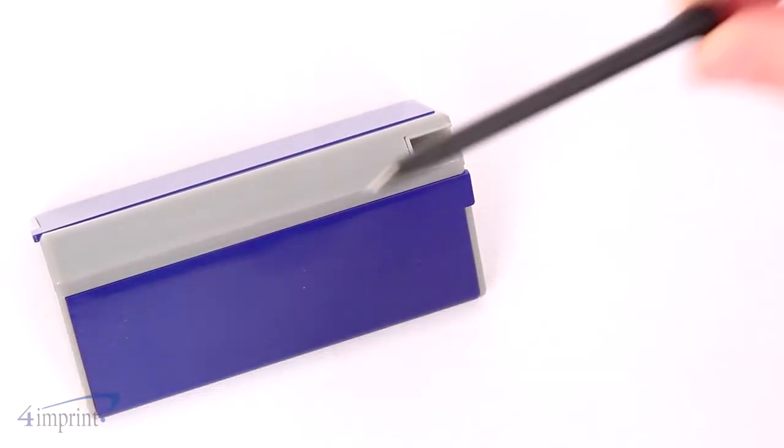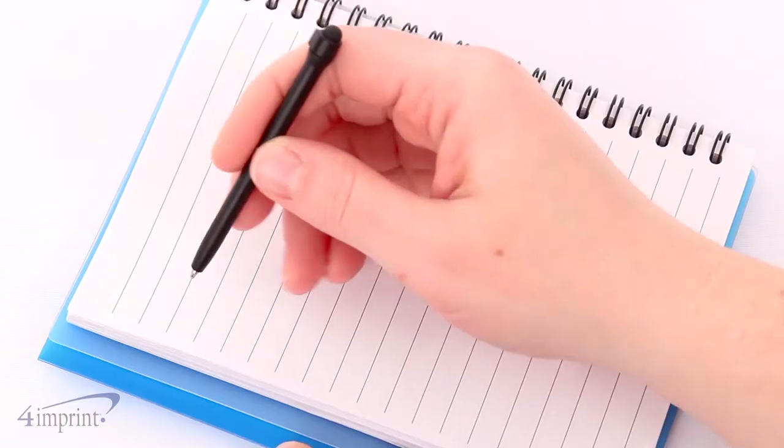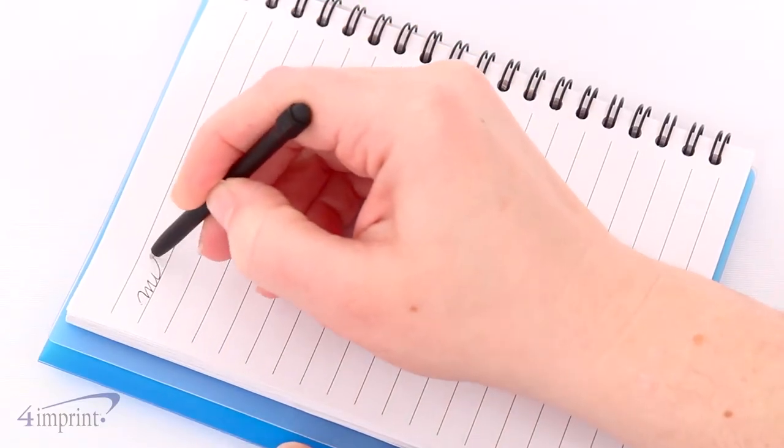On the top of the box, you'll find a stylus and a pen so you can navigate screens on your touch screen devices and jot down notes and phone numbers when needed.